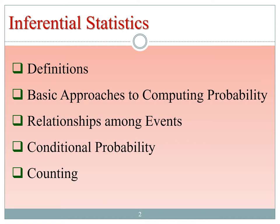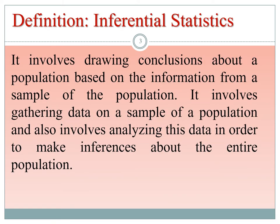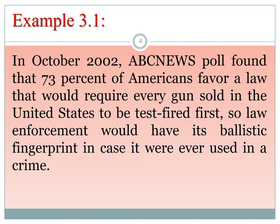Inferential statistics involves drawing conclusions about a population based on information from a sample. It involves gathering data on a sample of the population and analyzing this data in order to make inferences about the entire population. For example, in October 2002, ABC News found that 73% of Americans favor a law that would require every gun sold in the United States to be registered first.